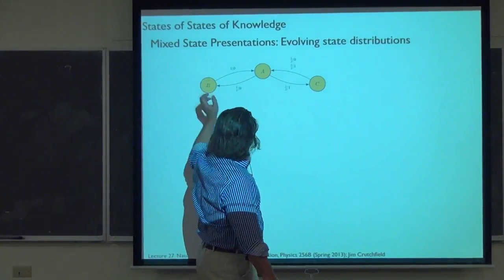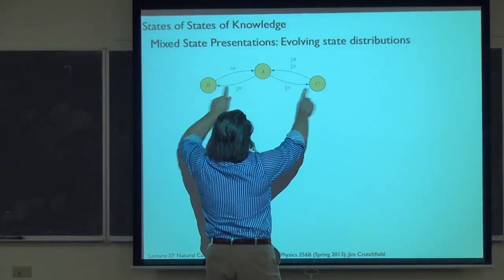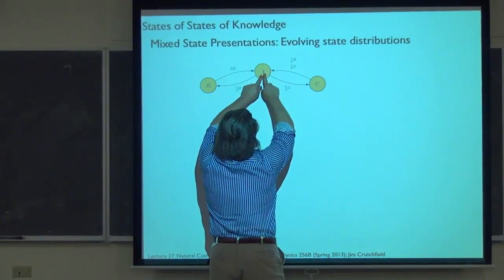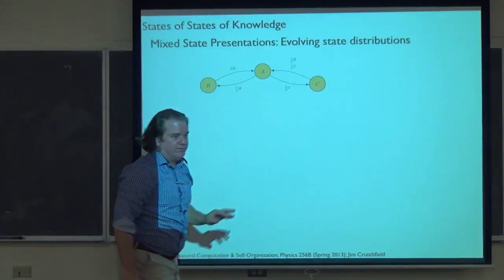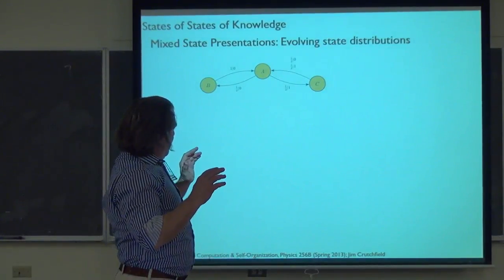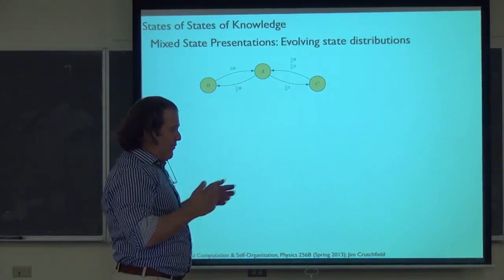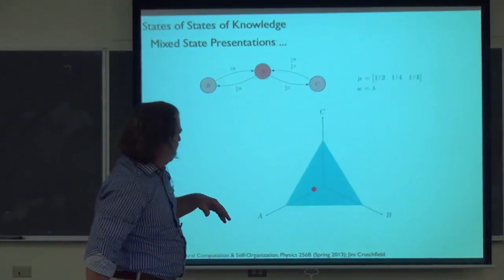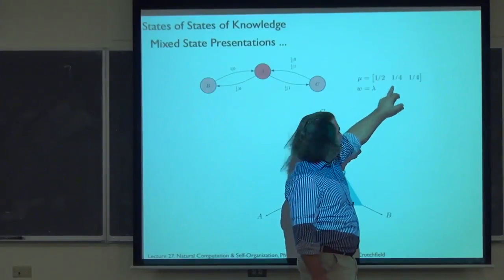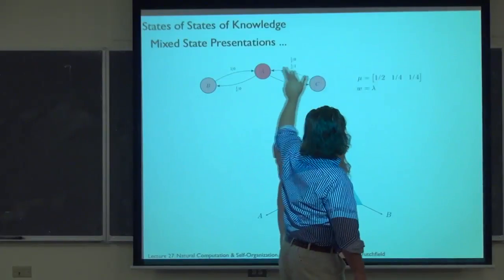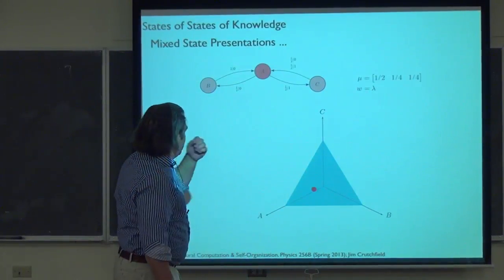A helpful way of thinking about this is looking at the time evolution of the state distributions. This particular state distribution is normalized over three states, so it lies on the simplex — all probabilities summing to one between zero and one lie in this triangle, a two-dimensional surface. The initial state distribution pi = (half, quarter, quarter) is here on the simplex. Now, we'll read in a word and talk through how our expectations of the hidden state get updated.